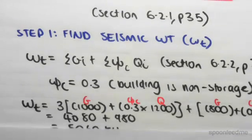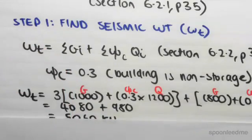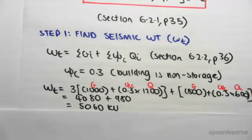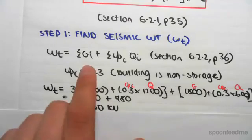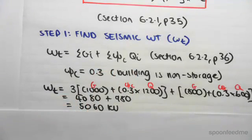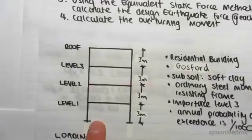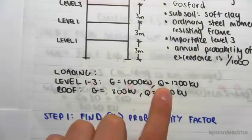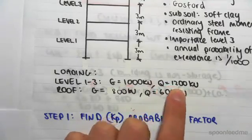To work out the seismic weight, it's pretty simple. You add up the dead and live load on each floor. If we go back to the problem we were given, on level one, two, and three, we're given a dead load of 1000 and a live load of 1200.